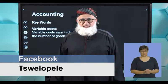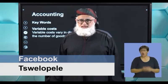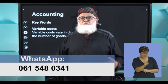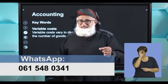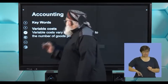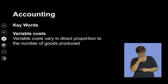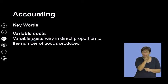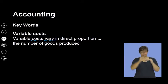Welcome back, accounting boffins. We're busy with cost accounting. We've dealt with all the important ledger accounts. Quick recap — a reminder is beneficial. When we're talking about variable costs, what are we talking about? We are talking about those costs that vary — they go up and down, they change. Why? Because they are in direct proportion to the number of goods that are produced.